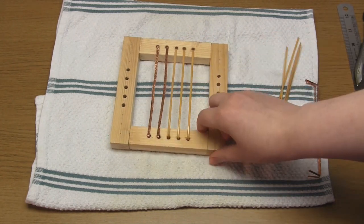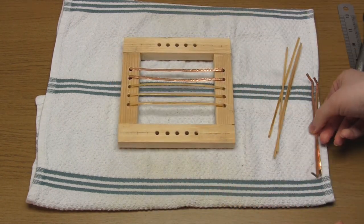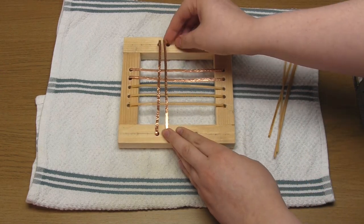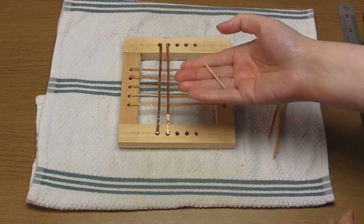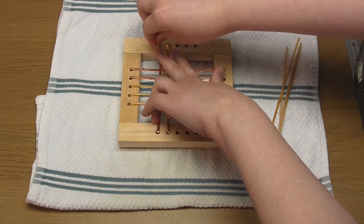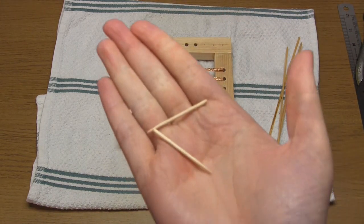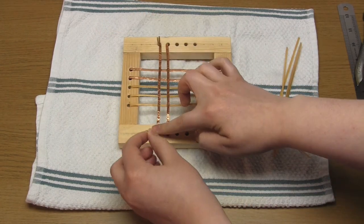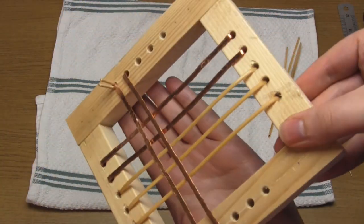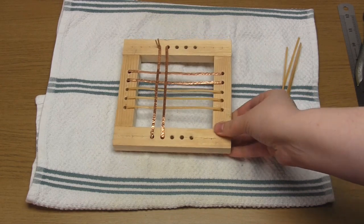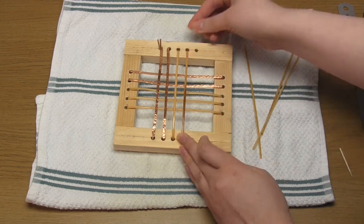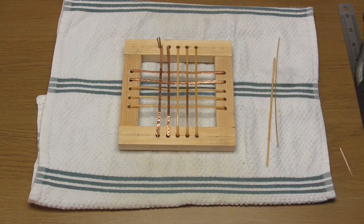Now turn the frame 90 degrees like so and do exactly the same again. So place two copper pieces on the left so that they're perpendicular to the first layer and then three cane pieces on the right. Note that if some of the pieces start to pop out of the holes in the frame you can always make some pegs out of cocktail sticks or offcuts of cane and push these into the holes and this will help to hold those pieces in place.